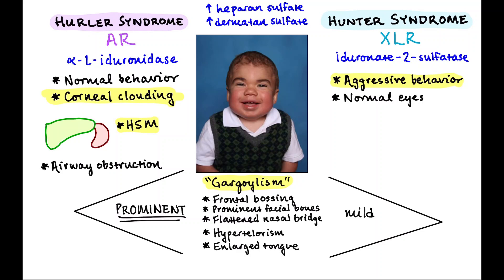Hunter syndrome is really just a mild version of Hurler syndrome. So you'll see that gargoyalism, but it may be a little less prominent. What you'll really see with Hunter syndrome is that gargoyalism, but also aggressive behavior — we're not exactly sure why that happens. What they don't have is corneal clouding. The way people tend to remember that is: hunters are often men, so it's X-linked and tends to be in boys. Hunters have to be able to see their target, so they don't have corneal clouding. And hunters shoot, which is an aggressive action — that's Hunter syndrome.